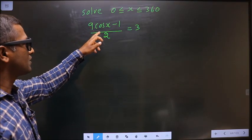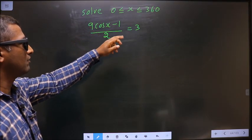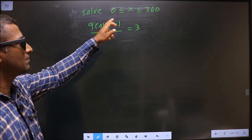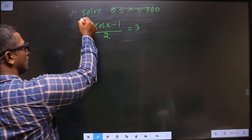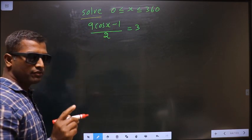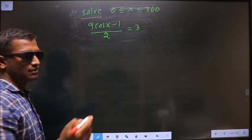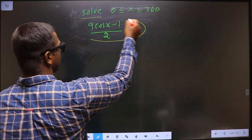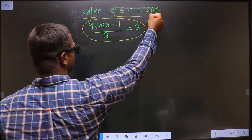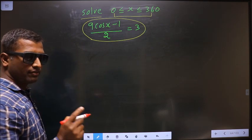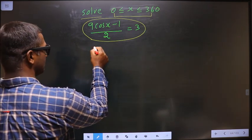Solve 9cos(x) - 1/2 = 3 where x lies between 0 and 360 degrees. You need to find the values for x satisfying this equation, and it should lie in this interval.